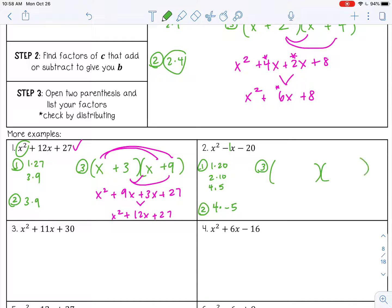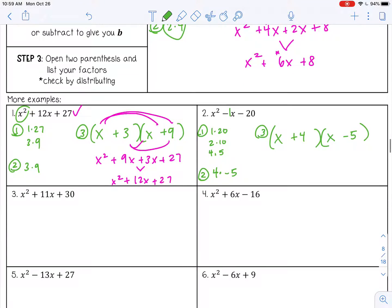So lastly, x and x, and I want a positive 4 and a negative 5. Or you could have written negative 5 and positive 4, but you have to have the signs correct. That negative needs to go with a 5, because it's 4 plus negative 5 that's going to give you that negative 1. And that's our final answer. And you can go back and distribute to check if you want.